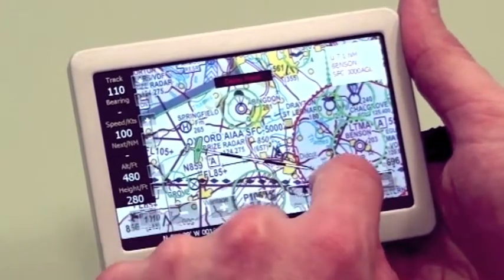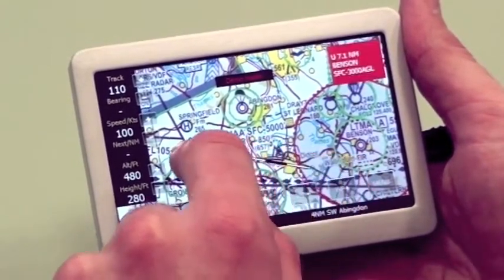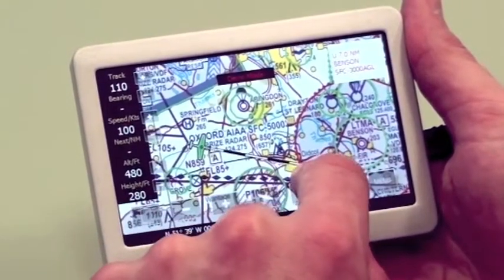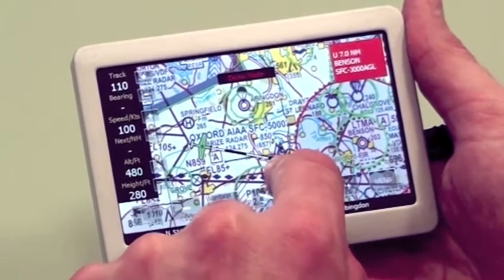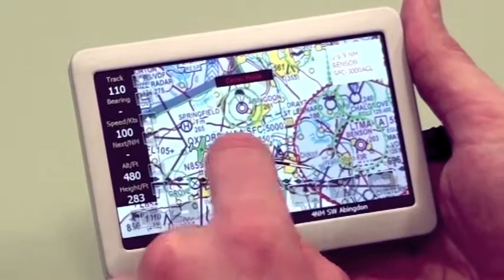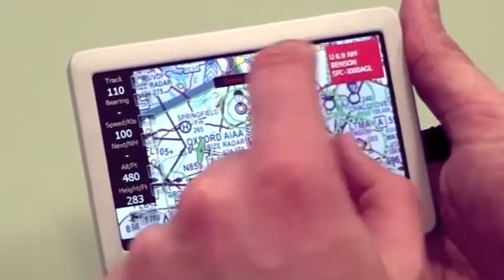This is a speed vector line. It gives you an indication of how fast you're going and some indication of time. It's split into sections: one, two, three, four, five minutes. So in five minutes time, or actually four and a half minutes time, you'd expect to be in the Benson zone.